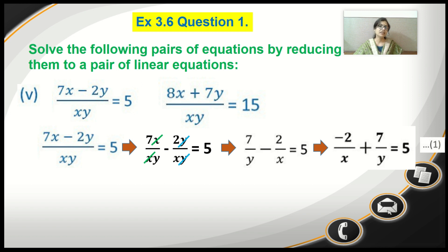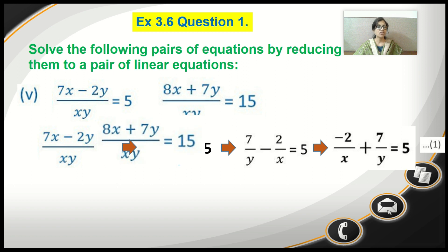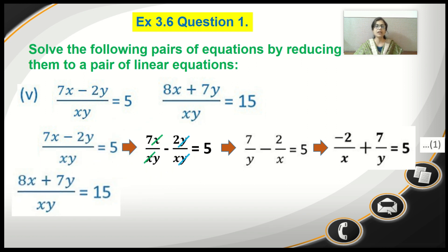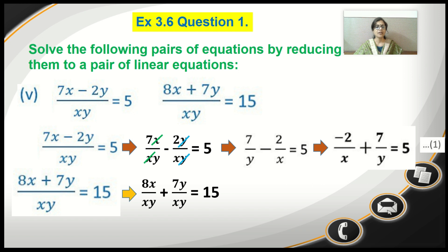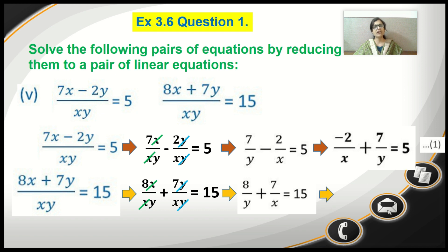Now let's consider the second equation. We will do the same thing — separate the terms keeping the denominator the same. So we write 8x upon xy plus 7y upon xy equals 15. Cancel x in the second term and y, leaving us with 8 upon y plus 7 upon x equals 15. Writing the x term first: 7 upon x plus 8 upon y equals 15. We number this as equation 2.